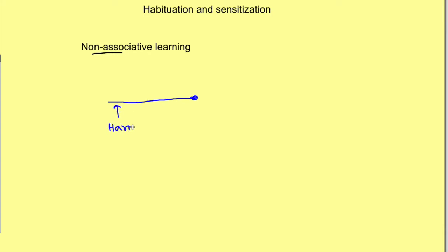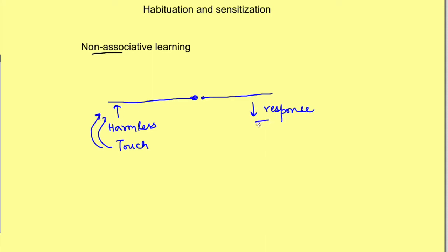In habituation, if a harmless or neutral stimulus is given repeatedly, there will be a decrease in response to the stimulus. For example, a touch stimulus initially causes a withdrawal response, but if given repeatedly it no longer elicits a response. In daily life, when you wear clothing you feel it initially, but later you don't even realize the cloth is touching your skin. Behaviorally, a decision is made that it is a neutral stimulus and hence irrelevant for survival, so resources should not be directed for responding to it. That's why habituation is actually the most common form of learning.